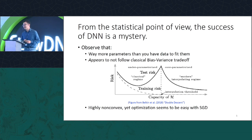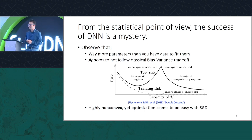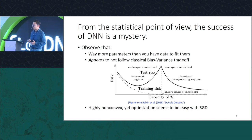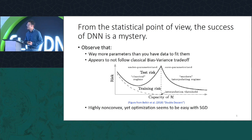Another interesting and surprising aspect of deep neural networks is that although they involve highly non-convex optimization problems, sometimes the simplest optimization algorithm like stochastic gradient descent just works out of the box. A lot of people are already working on this, so instead I'm going to ask the question in a slightly different way.